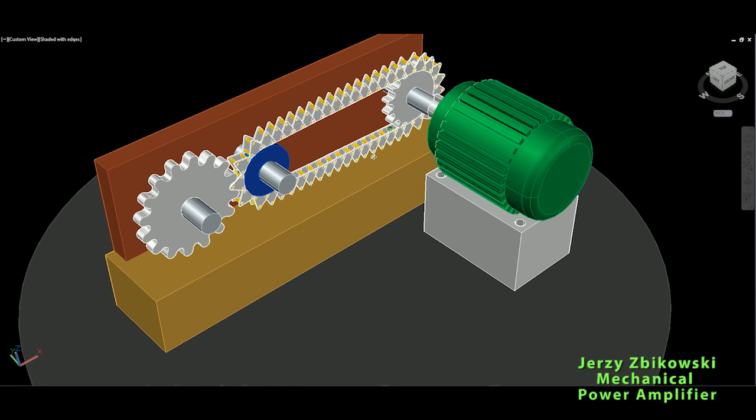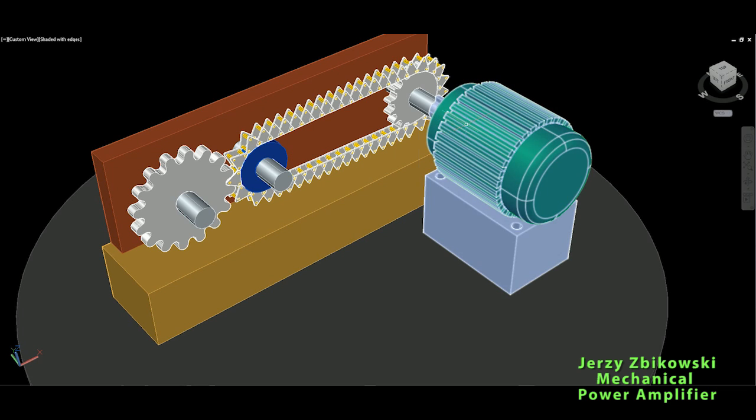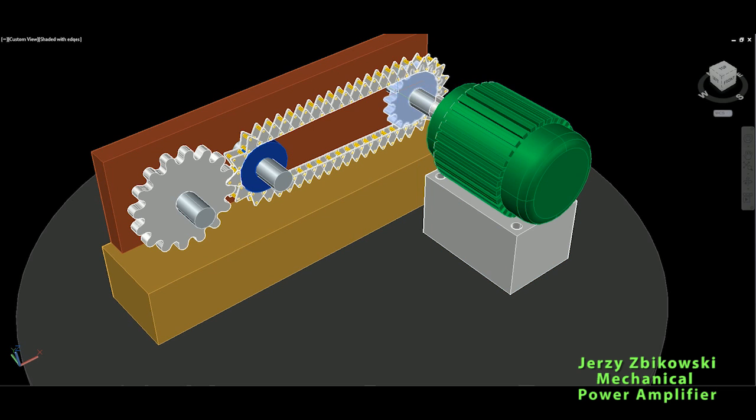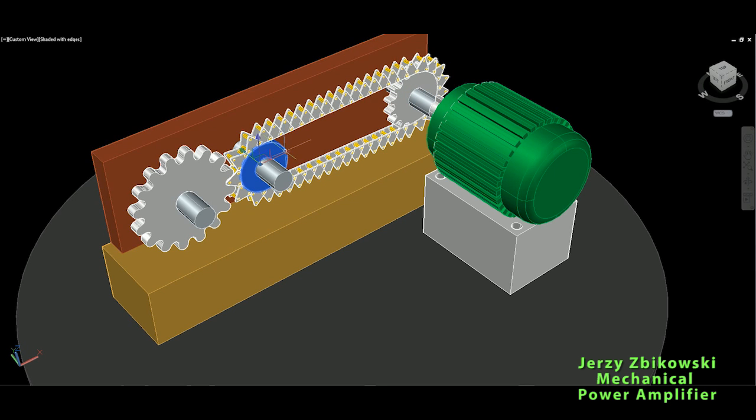Measurements have shown that this motor will transmit this sprocket, and through this chain and the blue tensioner of the chain, will produce on this second sprocket 147% more power.